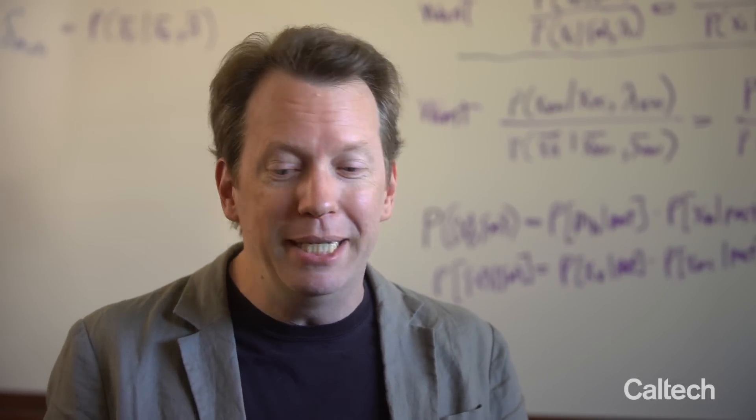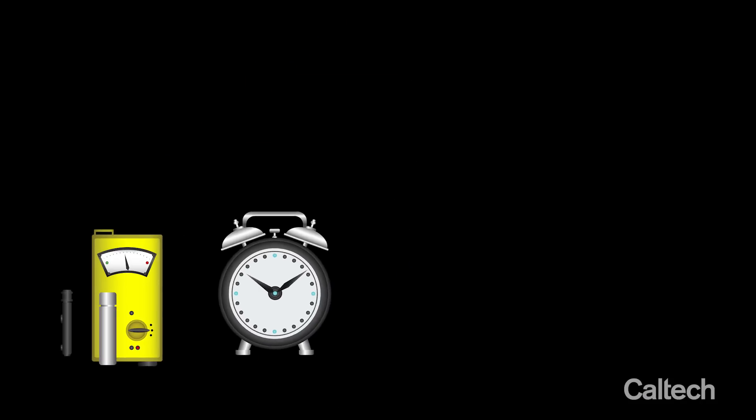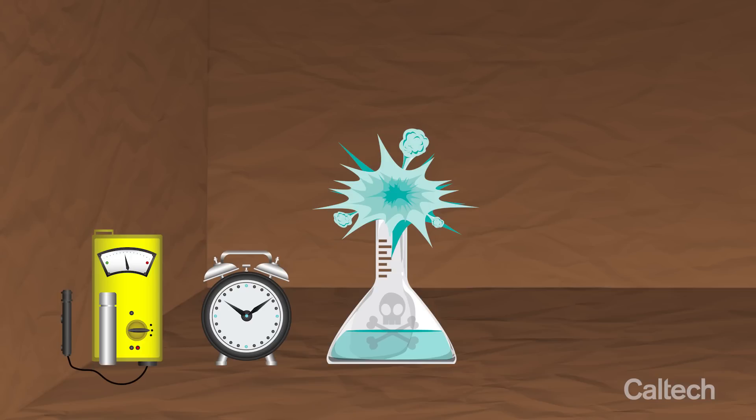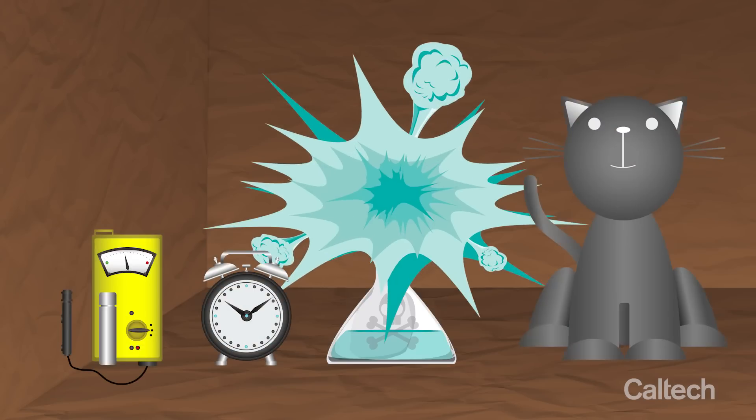Schrodinger invented a clever experiment. He has a Geiger counter that sets off an alarm that smashes a bottle of poison. All of this is in a box with a cat. There's only a quantum mechanical probability that that actually happens. The poison fills the box and kills the cat.